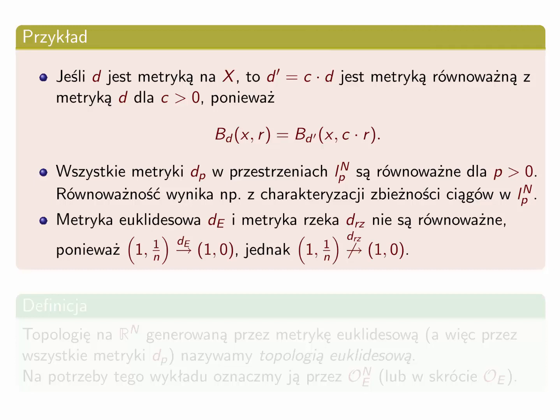Trzeci przykład: metryka euklidesowa, którą oznaczę d z indeksem e, i metryka rzeka d z indeksem rz nie są równoważne, ponieważ ciąg o współrzędnych (1, 1/n) zbiega względem metryki euklidesowej do punktu (1,0). Zbieżność w metryce euklidesowej wynika z faktu, że zbiegają obie współrzędne. Jednak ten ciąg nie zbiega do (1,0) względem metryki rzeka. Brak zbieżności był wykazany we wcześniejszym wykładzie o ciągach.